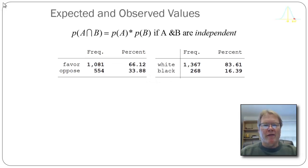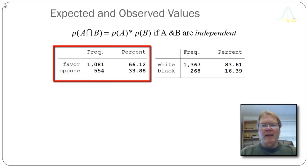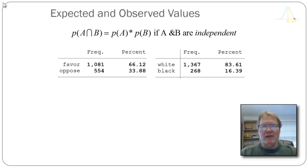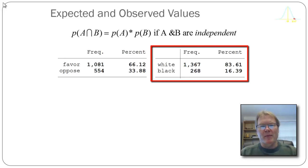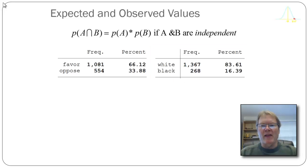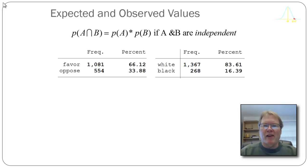Let's look at univariate frequency distributions. From the 2012 General Social Survey, just looking at capital punishment, 66.12% of all respondents favor capital punishment compared to 33.88% who oppose. Thinking probabilistically: if I randomly selected a person, the probability of selecting someone who favors capital punishment is 0.6612, and opposing is 0.3388. For race, the probability of selecting a white respondent is 0.8361, and for black it's 0.1639.